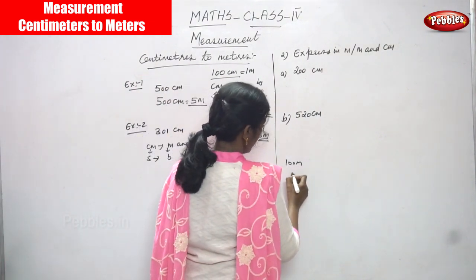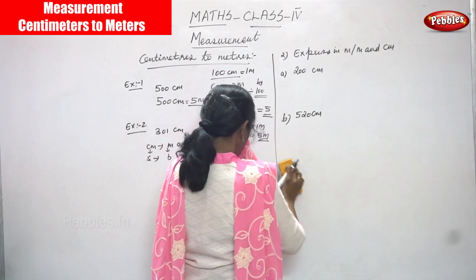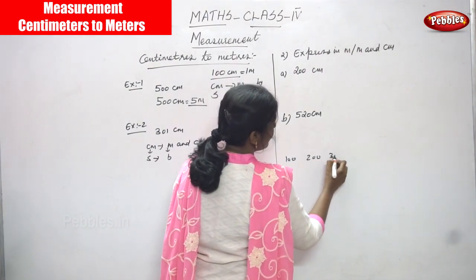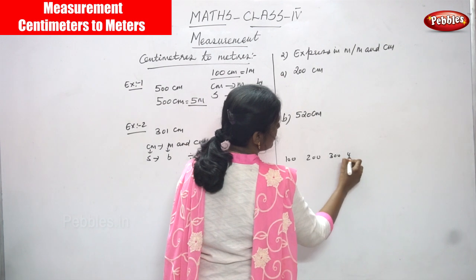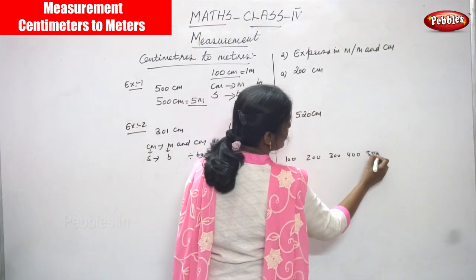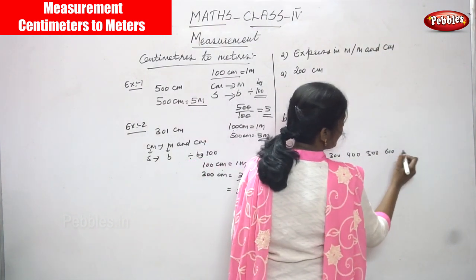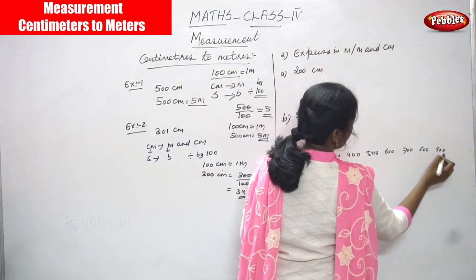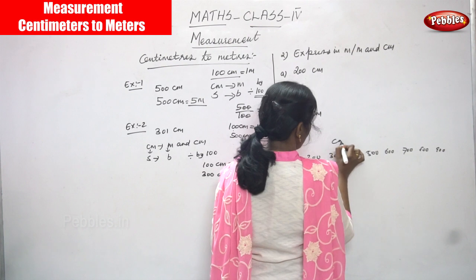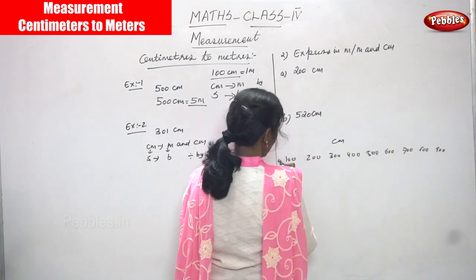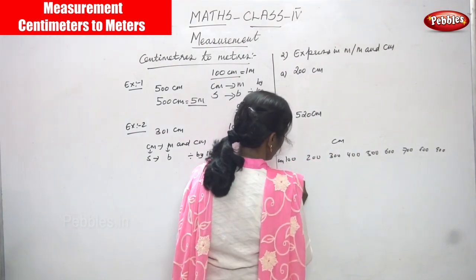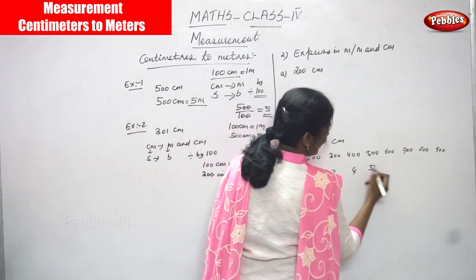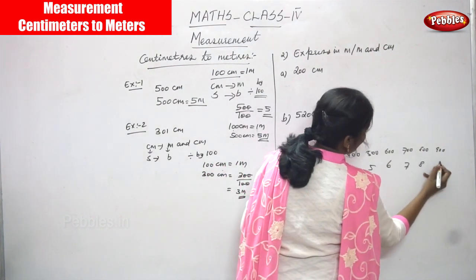100 centimeters, 200 centimeters, 300 centimeters, 400 centimeters, 500 centimeters, 600 centimeters, 700 centimeters, 800, then 900 — these are all centimeters. So you convert into meters: this is 1, this is 2, this is 3, this is 4, this is 5, 6, 7, 8, and 9.